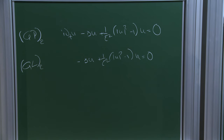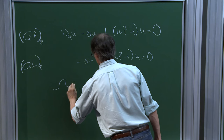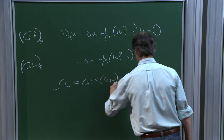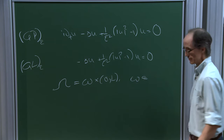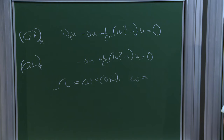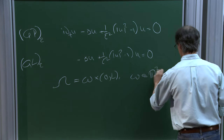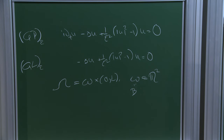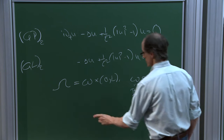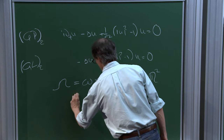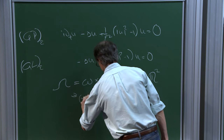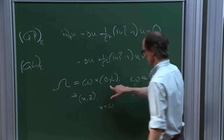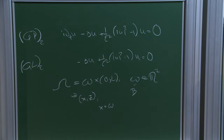The setting for all this will be in three dimensions, in a cylindrical domain: omega cross zero-L, where little omega is a bounded open subset of R², say simply connected. In fact, we can take it to be a ball if we like for most of the talk. I'll write points in omega in the form x and z, where x is in little omega and z is the vertical variable.